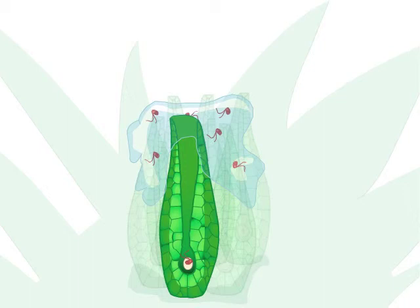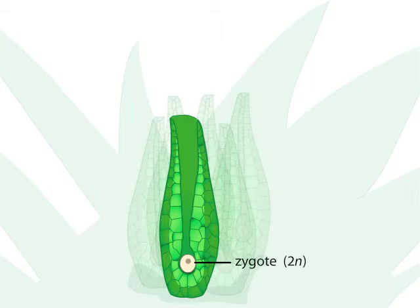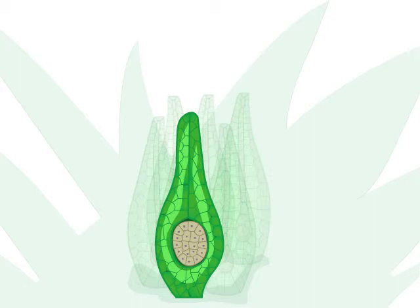The fusion produces a diploid zygote, the first cell of the next generation called the sporophyte generation. The zygote divides by mitosis and grows into a multicellular sporophyte. During the life of the sporophyte, it remains attached to the gametophyte and depends on the gametophyte for water and nutrients.